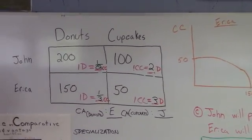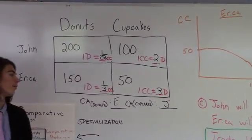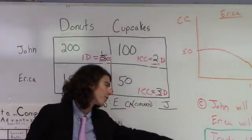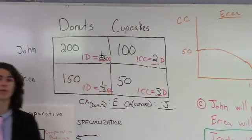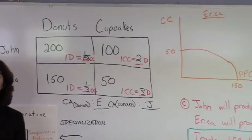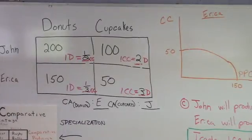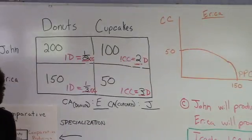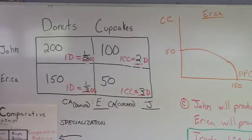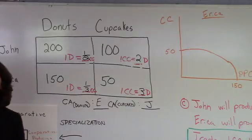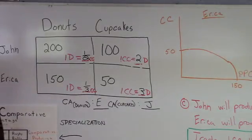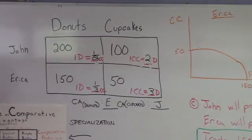So, part one, the trade agreement, or the terms of trade, one cupcake and four donuts, John will benefit, because his opportunity cost would be two cupcakes to get four donuts. But after this trade, he will only have to give up one cupcake to get four donuts.